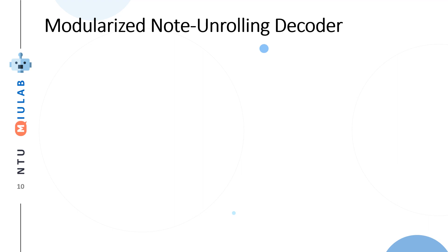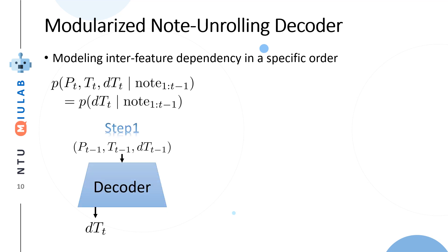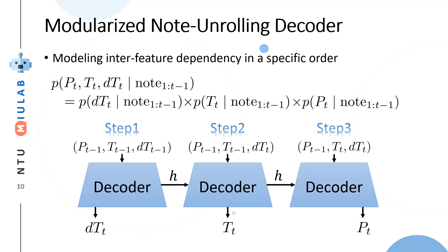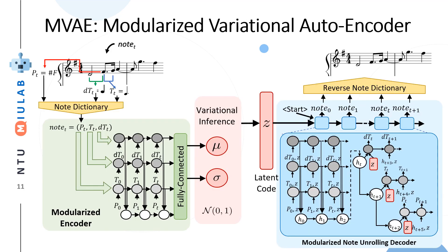Also, in the decoder side, we add an additional technique called note unrolling. The idea is we want to model the inter-feature dependency in a specific order. We have pitch, duration, and time difference. Given the previous note event, we want to learn the probability of this joint probability. We can separate it into time difference, duration, and pitch later on. You can see there's a specific order for modeling three types of features. This idea comes from previous work, so we directly borrow the idea and incorporate it into our model.